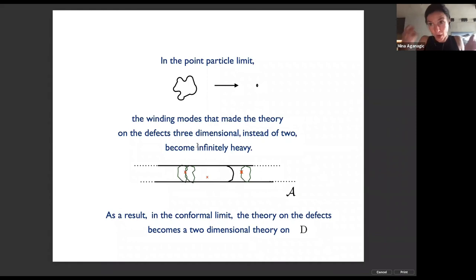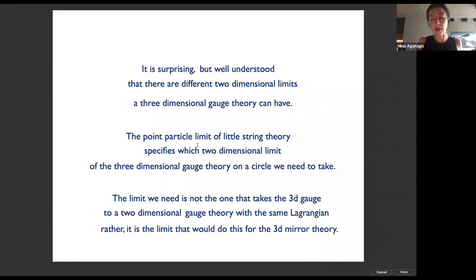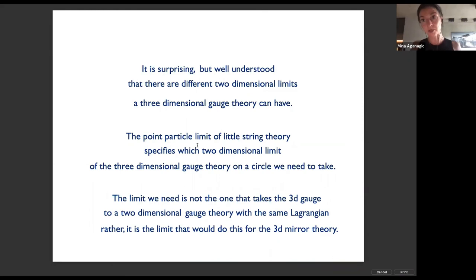In the point-particle limit, winding modes are infinitely heavy. As a result, the theory on defects becomes two-dimensional rather than three-dimensional. It's surprising but well understood that three-dimensional gauge theories can have different two-dimensional limits; the point-particle limit of the little string theory specifies exactly which two-dimensional limit of the three-dimensional gauge theory on a circle to take. That's also the limit that takes the world of the qKZ equation and quantum affine algebra to the affine Lie algebra.